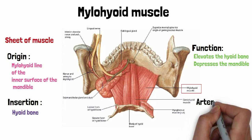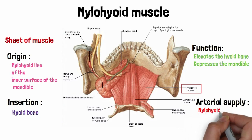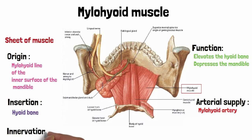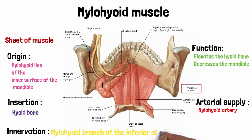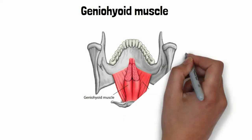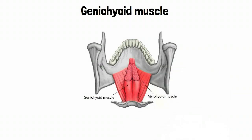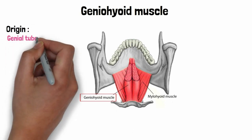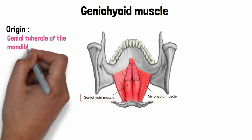The mylohyoid muscle receives its arterial supply from the mylohyoid artery, a branch of the inferior alveolar artery of the internal maxillary artery. It is innervated by the mylohyoid branch of the inferior alveolar nerve, a branch of the mandibular division of the trigeminal nerve. The geniohyoid muscle is also present on the floor of the oral cavity. It is a narrow paired muscle situated above the medial part of the mylohyoid muscle. It arises from the genial tubercle of the mandible and runs backwards to attach to the anterior surface of the body of the hyoid bone.